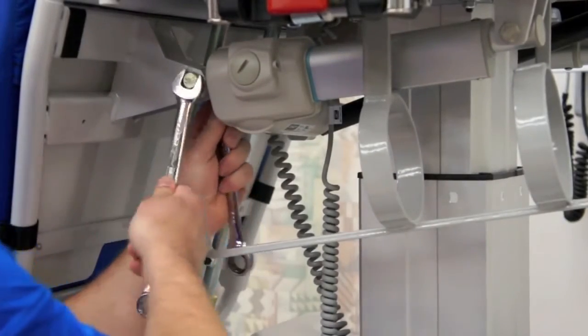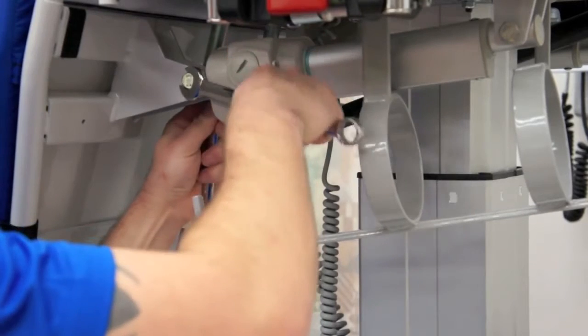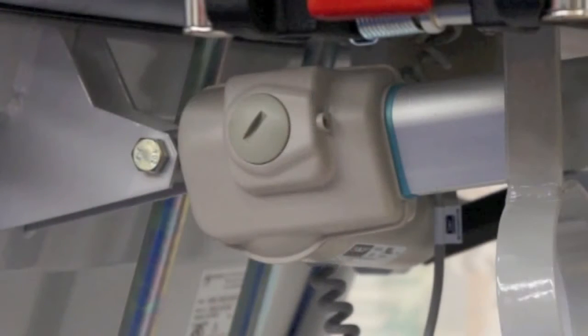Next, with the two wrenches, remove the nut on the front part of the actuator. Leave the bolt in the actuator. This will help support the actuator while you are removing the nut and bolt on the back of the actuator.